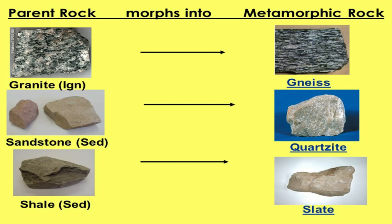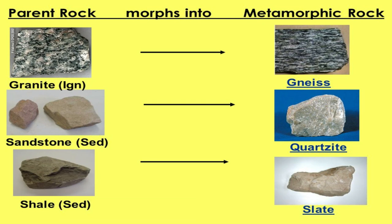The parent rock is just what it comes from. Here we have granite — an igneous rock — becoming a foliated metamorphic rock called gneiss. Sandstone, a clastic sedimentary rock, becomes quartzite. And shale, another clastic sedimentary rock, becomes slate.